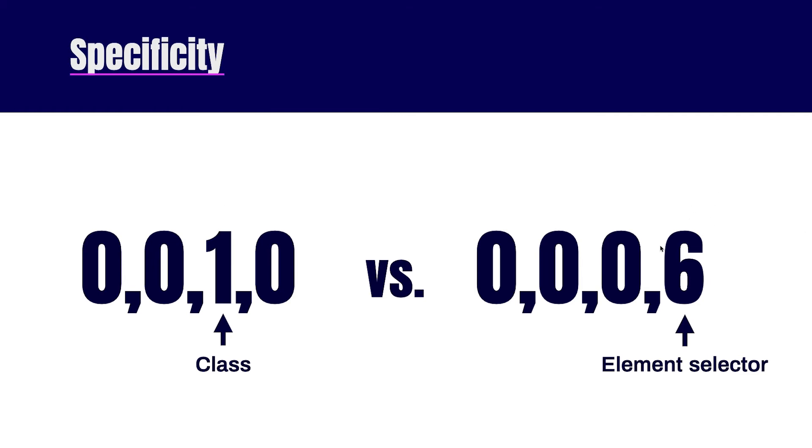It doesn't matter that there are six here and there's only one here. Because there is one in the class position and there's zero in the class position for the one on the right, it automatically will triumph anything you have in the element selector. So it could be zero zero zero 100 here and still the one on the left is going to win. So it's a weighted system.